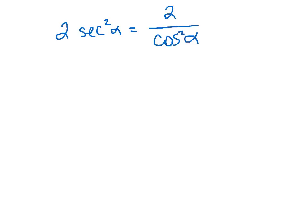So if you have a 2 up here, we know that if we separate this 2 from this 1 over cosine squared alpha, we know that 1 over cosine squared alpha is equal to secant squared alpha.